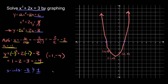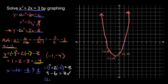Let's plug in negative 3: negative 3 squared plus 2 times negative 3 equals 3. Negative 3 squared is positive 9, and 2 times negative 3 is negative 6. So 9 minus 6 equals 3 — that's a true statement, so negative 3 is a solution. Then checking x equals 1: 1 squared plus 2 times 1 equals 3. 1 squared is 1, and 2 times 1 is 2, so 1 plus 2 equals 3 — also a true statement, so 1 is also a solution.